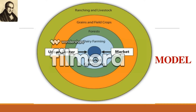The fourth ring is grains and other crops. The reason this is located here is because you need to have lots of farmland to do grains and crops, which means you want the cheapest possible land.